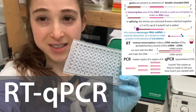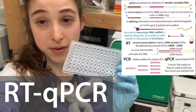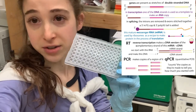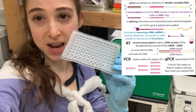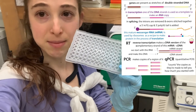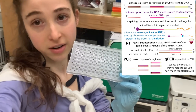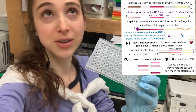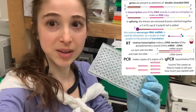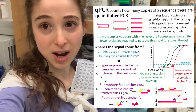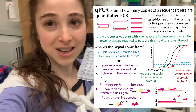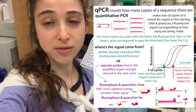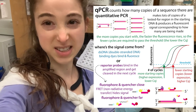RT-qPCR is, among other things, used to see how much of various proteins are being made or expressed in cells under different conditions or in different cell types. It does this by making DNA copies of the messenger RNA copies of genes, and then making more DNA copies of those, and then detecting those copies as they're being made. That sounds complicated, but it's really not that bad, so let's go over both an overview and some technical details.